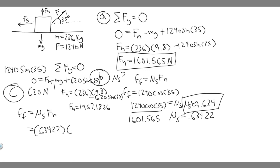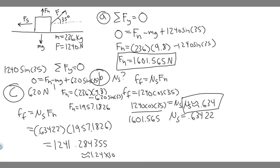So F sub F equals 1957.1826 times 0.63422, and when you multiply this out you get approximately 1241.28 newtons. You can round however you want — I'll express it as about 1.24 times 10 to the 3 newtons. Make sure to include units of newtons since it's a force. So 1.24 times 10 to the 3 newtons is your answer to Part C. Those are your answers for A, B, and C — hopefully you found this useful.